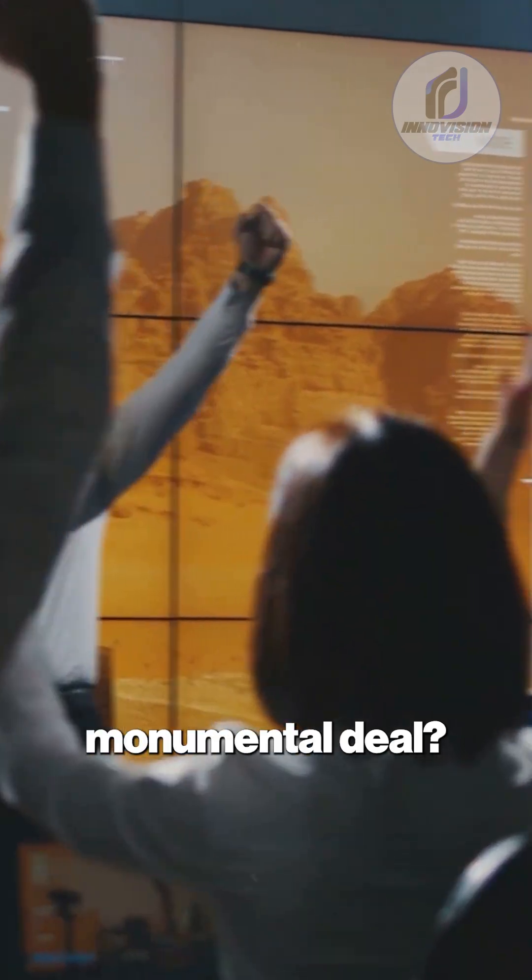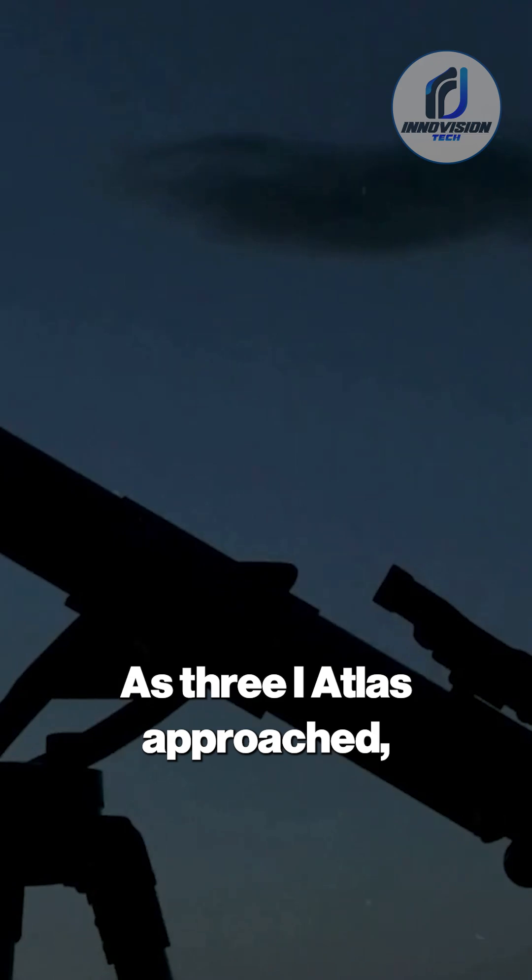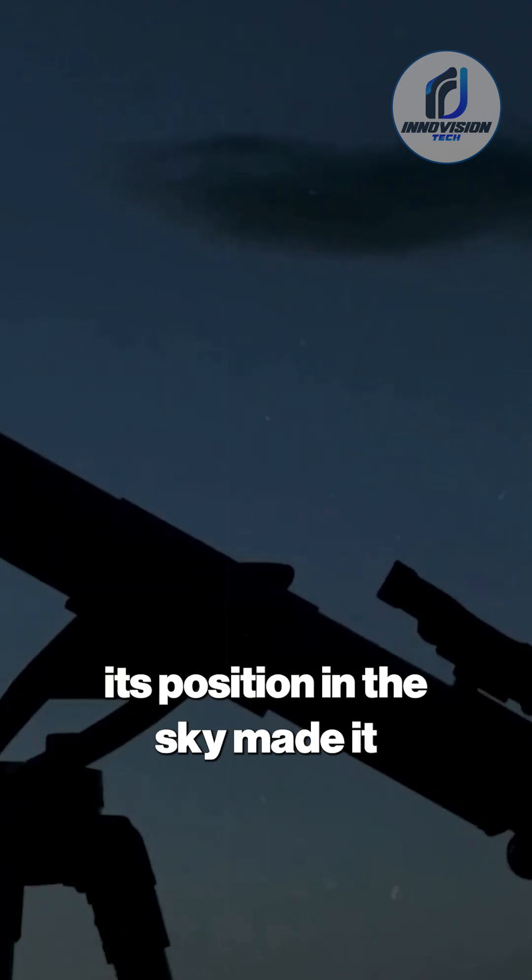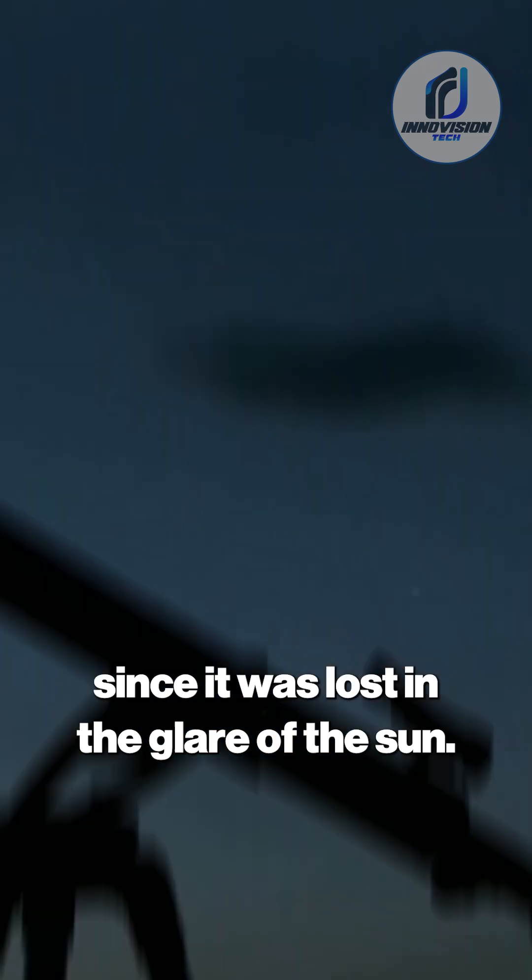So why was this Mars flyby such a monumental deal? Because our assets there could see what Earth couldn't. As 3i Atlas approached, its position in the sky made it impossible to view with ground-based telescopes, since it was lost in the glare of the sun.